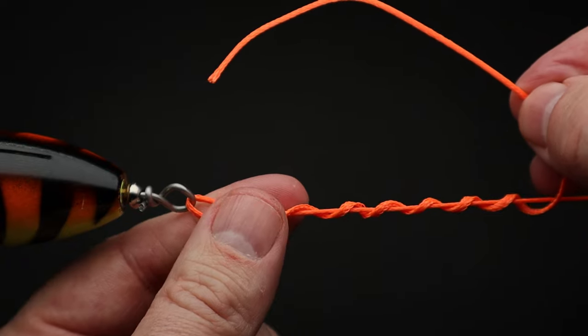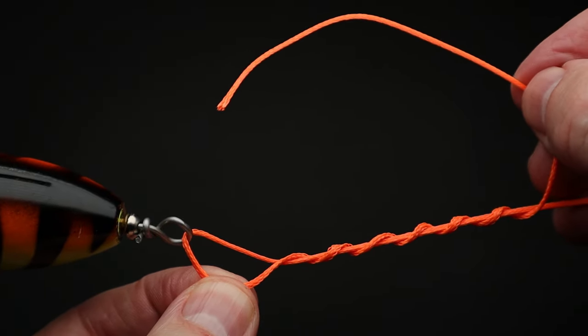Now take the end of the line and run it up through the loop at the eye of the lure.